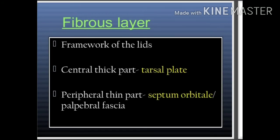The fibrous layer is the framework of the lid, formed by the tarsus and palpebral fascia together. The tarsal plate consists of dense fibrous tissue to support the eyelid. The upper tarsal plate is bigger and almond-shaped, whereas the lower is smaller and broad. The medial ends of the two tarsal plates are connected by the medial palpebral ligament to the lacrimal crest of the maxilla, in front of the lacrimal sac. The lateral ends are connected by the lateral palpebral ligament to the tubercle on the zygomatic bone, called Whitnall's tubercle. The tarsi are connected to the orbital margin by the palpebral fascia, otherwise called the orbital septum.